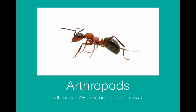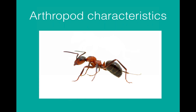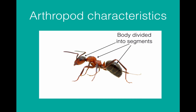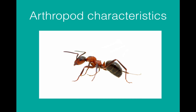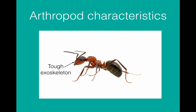This video is going to look at one of the five life animals, namely the arthropods or arthropoda. The arthropods share a number of different characteristics. These include a body that is divided into various segments. They will have jointed legs, which is what arthropod means. And they will have a tough exoskeleton.